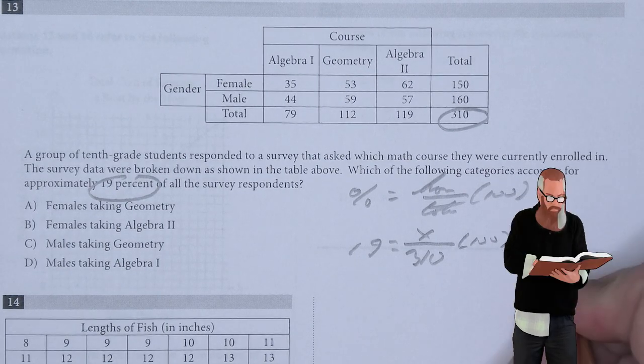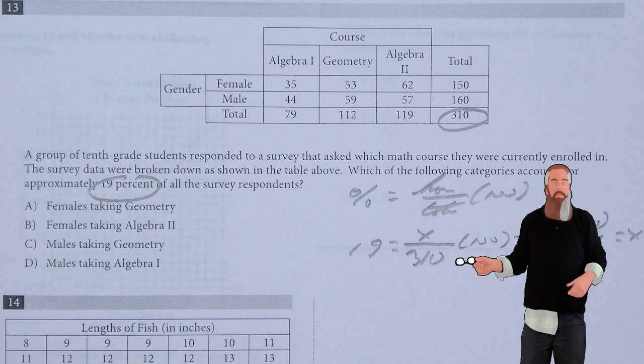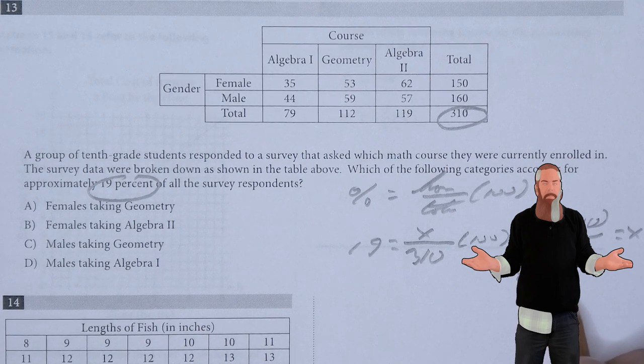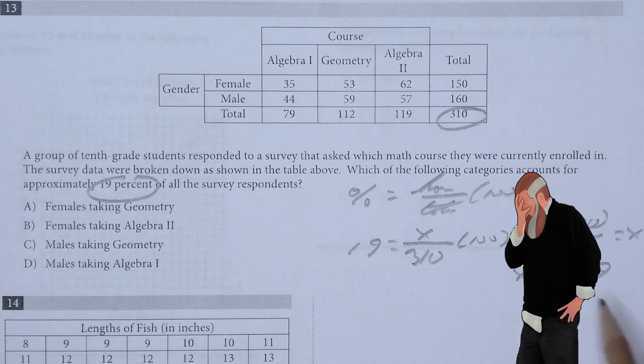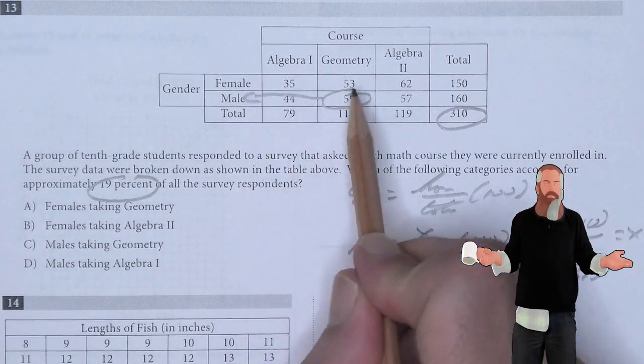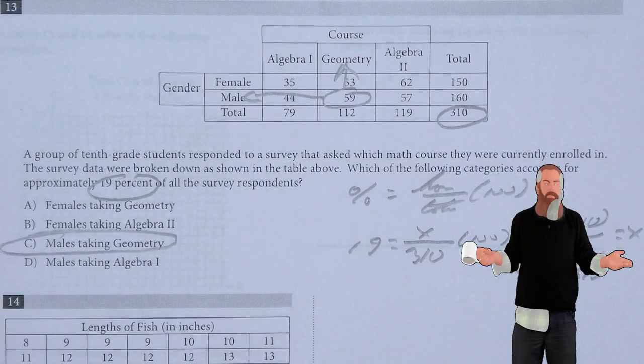A percent is equal to what we have divided by the total times 100. So 19 equals x divided by 310 times 100. This means 19 times 310 divided by 100 is equal to x. We're going to get that x is 58.9. 58.9 is close to 59, which is males in geometry. So C is the answer.